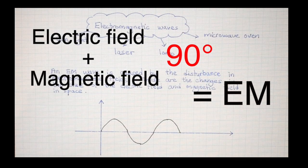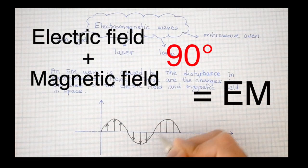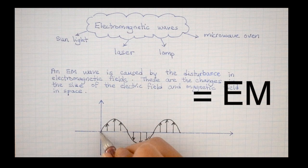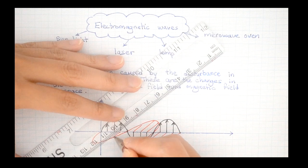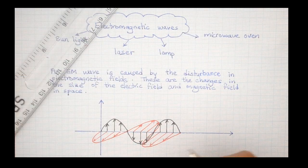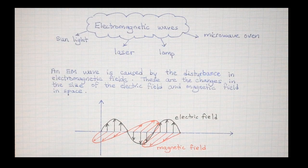And by convention, we draw the electric field vertically and the magnetic field horizontally. So there, we have our electromagnetic wave. It's not as simple as this, but for the purpose of studying for A-level, this is all we need to know.